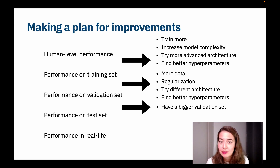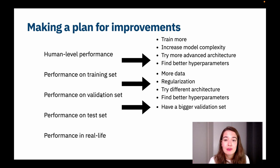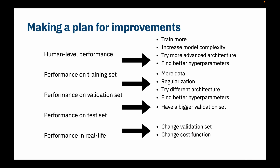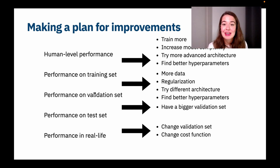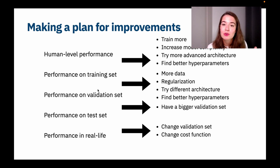And let's say all of our performances are very good, but for some reason our model is not performing well in real life. In that case, you can either change the validation set, because obviously something is going wrong and it's not representing real life well. Or you can change your cost function, because maybe the thing you're optimizing and getting good performance on is not the thing that people are actually looking for in real life. When it comes to evaluating and diagnosing models, this is a very valuable step — it gives us a chance to stop, take a step back, and understand what could be going wrong.